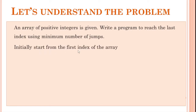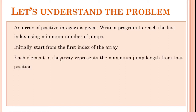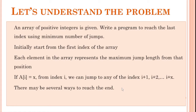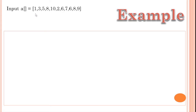That is the 0th index. So initially, start from the first index of the array and each element in the array represents the maximum jump length from that position. If you have a 3, you can do 3 jumps. If a[i] is equal to x, from the i-th index you can jump to any of the indices i+1, i+2, and so on up to i+x. There may be several ways to reach the end, but we need to find out the minimum number of jumps.